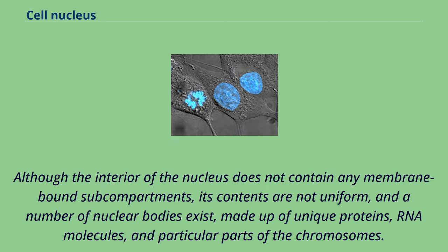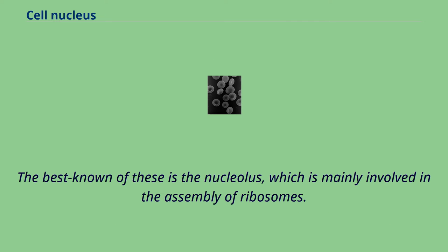Although the interior of the nucleus does not contain any membrane-bound subcompartments, its contents are not uniform, and a number of nuclear bodies exist, made up of unique proteins, RNA molecules, and particular parts of the chromosomes. The best known of these is the nucleolus, which is mainly involved in the assembly of ribosomes.